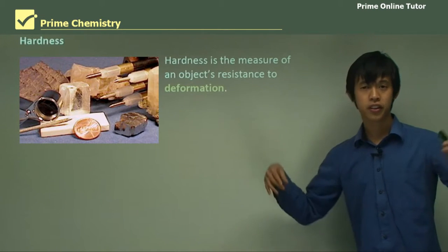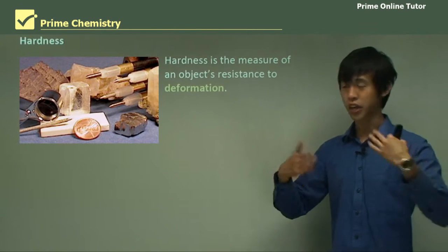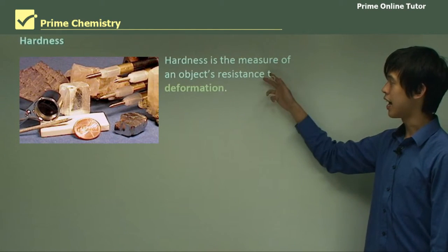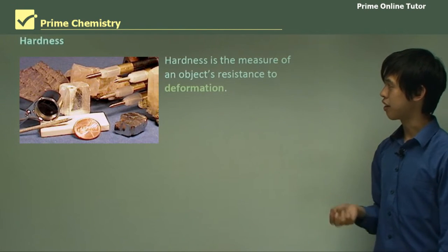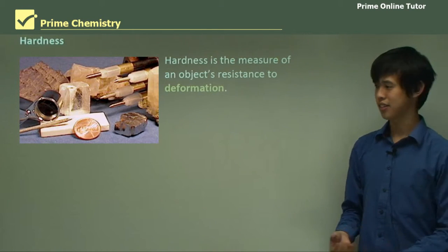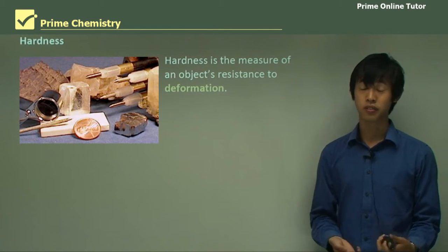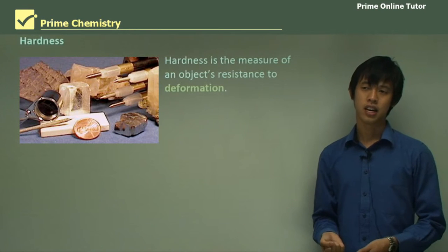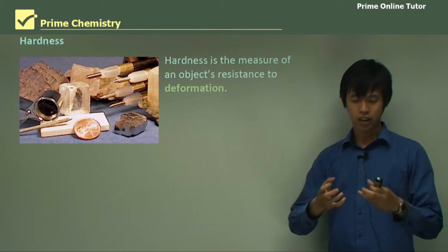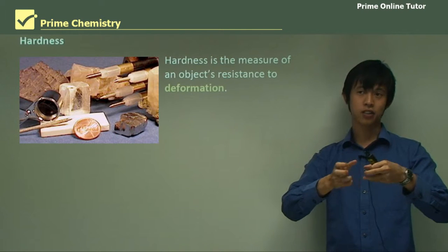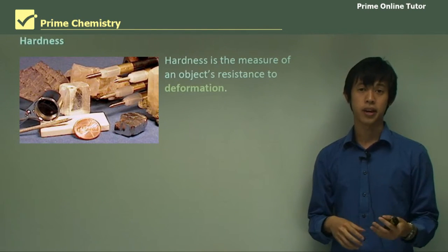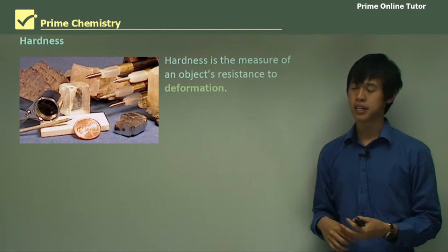Now that we've covered electrical conductivity, we're going to move to another property: hardness. Hardness is the measure of an object's resistance to deformation. So if I had something soft, I could apply very little force and get it to deform or change shape and stay that way.